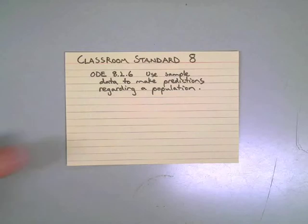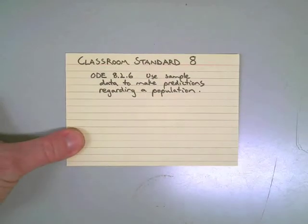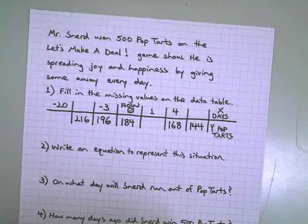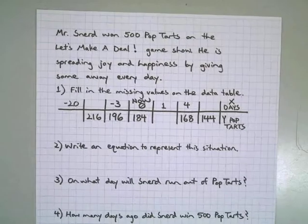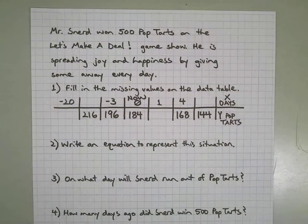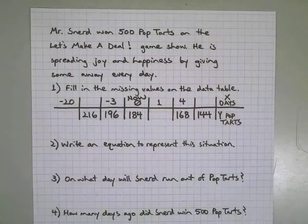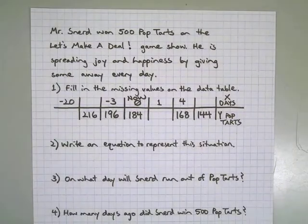Let's take a look at a problem I made up for it. Zoom out. Mr. Snurd won 500 pop-tarts on the Let's Make a Deal game show. He is spreading joy and happiness by giving some away every day.